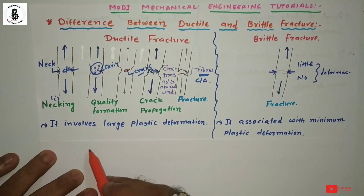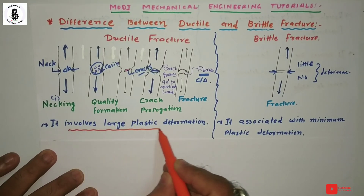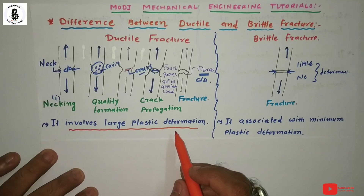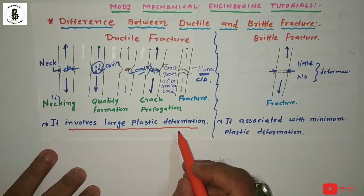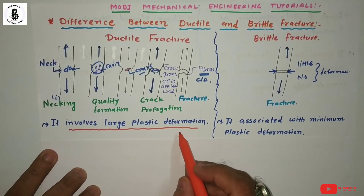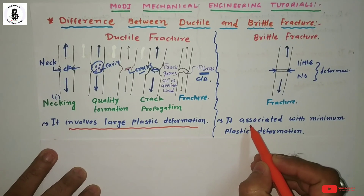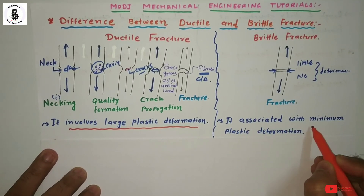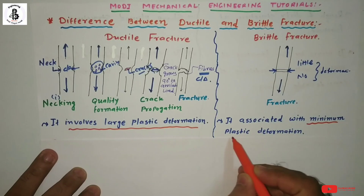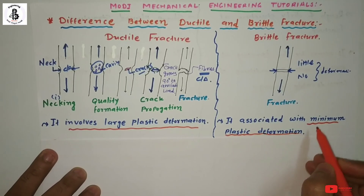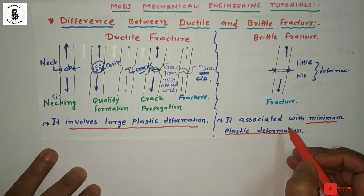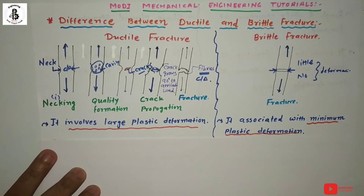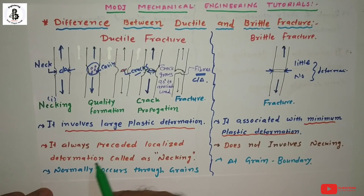In ductile fracture, it involves large plastic deformations — in simple terms, permanent deformations. The material undergoes large plastic deformations before failure. But in the case of brittle fracture, it is associated with minimum plastic deformation — there is little or no permanent deformation, and the material fails by the application of impact loading.